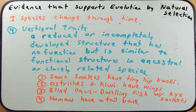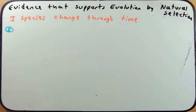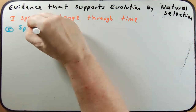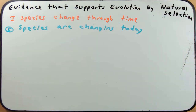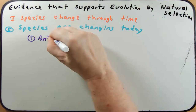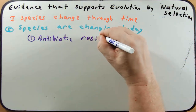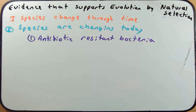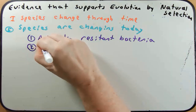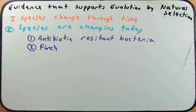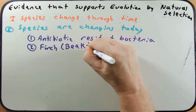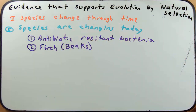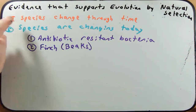The fifth piece of evidence is that species are changing today — under our very own eyes we see evidence of this. For instance, antibiotic-resistant bacteria change over time to form new species. Finches also show change through time, primarily when we study their beaks and the size of their beaks. These are the five pieces of evidence that support that species change through time.